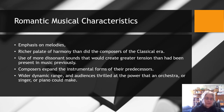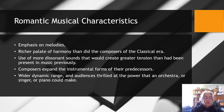This slide takes us through some typical Romantic musical characteristics, like an emphasis on melodies, richer harmony, and even more use of dissonance. Composers tended to use instrumental forms in an even bigger way and expanded them. We had more louds and softs — wider dynamic ranges — as the orchestra grew, and so did its power and the palette of sound available to composers.